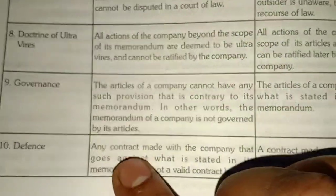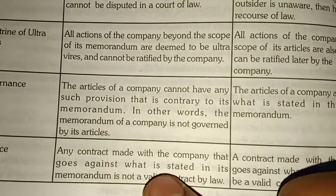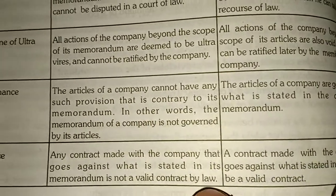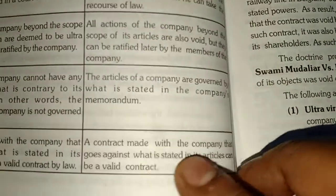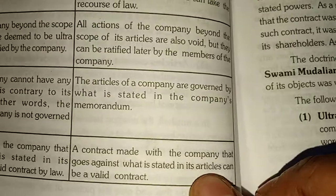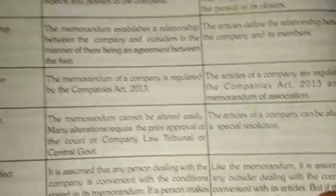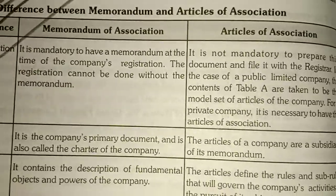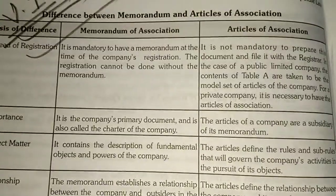Point ten: defense. Any contract made with the company that goes against what is stated in its memorandum is not a valid contract by law. However, for articles of association, a contract made with the company that goes against what is stated in its articles can be a valid contract. These are the differences between the memorandum of association and the article of association.